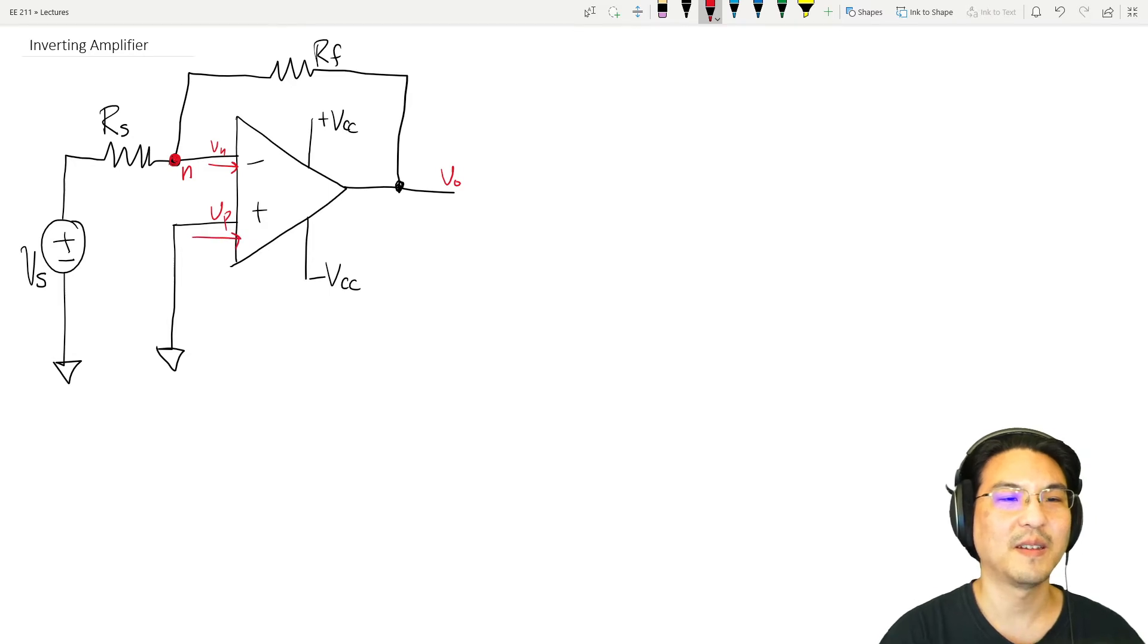There's current going this way and this way. I'll just leave the pictures of the current: IN, IP. KCL at node N.